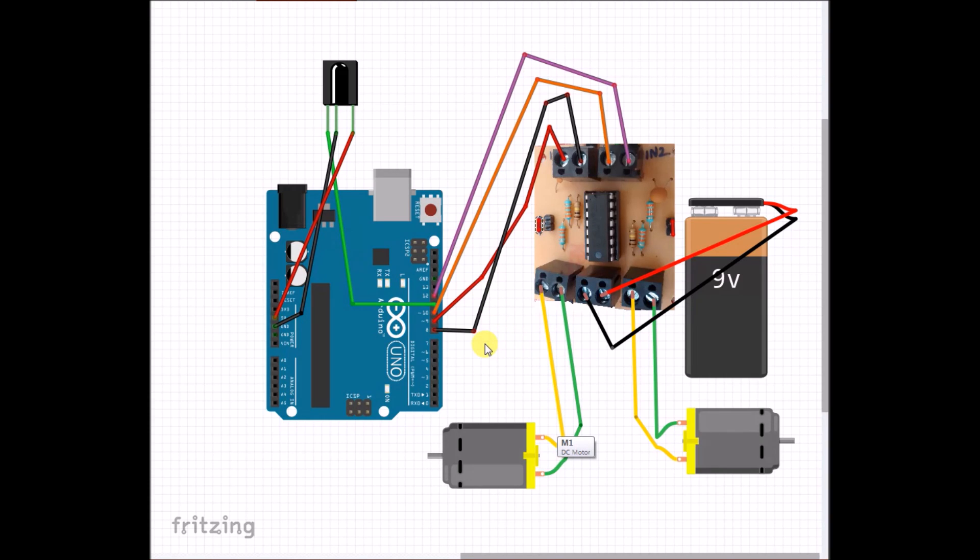So that's pretty much all of it. It's quite a simple circuit. If you have any doubts, you can always leave it in the comments. And you can find a JPEG image of this on my blog in the description below. So make sure you check it out. And that's pretty much with the electronics bit. Let's go to the programming of it.